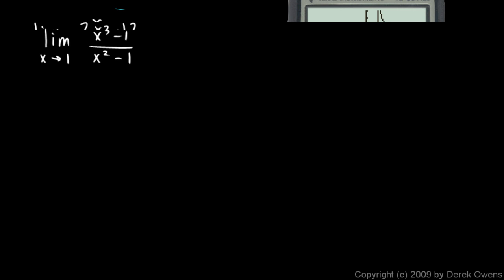Okay, here's one more. The limit as x approaches 1 of x cubed minus 1 over x squared minus 1. And clearly as x gets close to 1, the numerator and denominator both get close to 0. So the trick here is to factor these. So this will be the limit as x approaches 1.